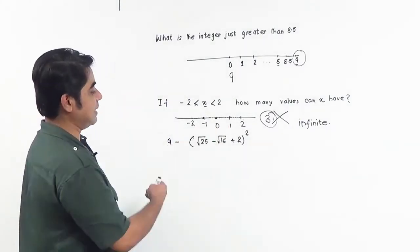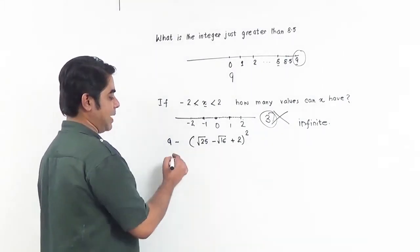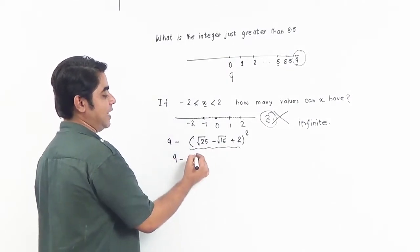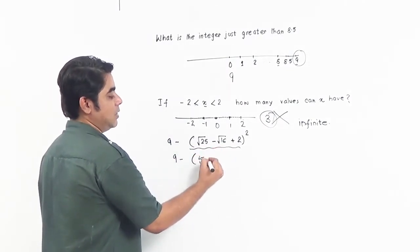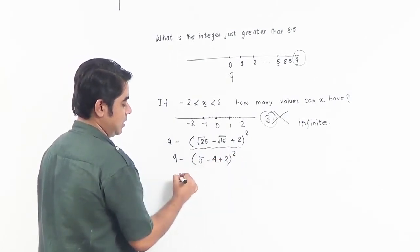The next one is a simplification. We'll use the BODMAS rule, so first we'll simplify the bracket. 9 minus root 25 is 5, root 16 is 4, plus 2, whole square.